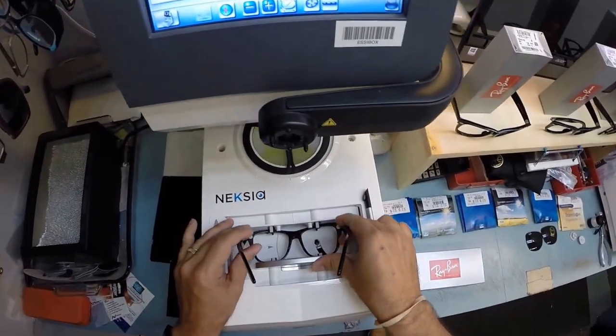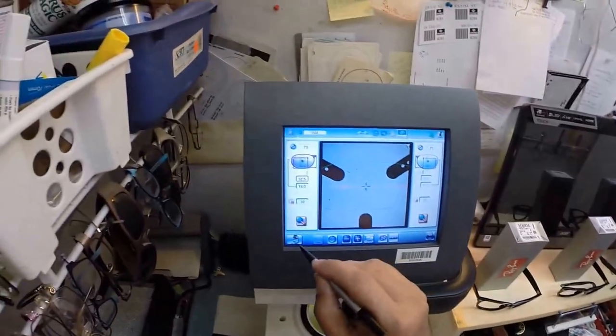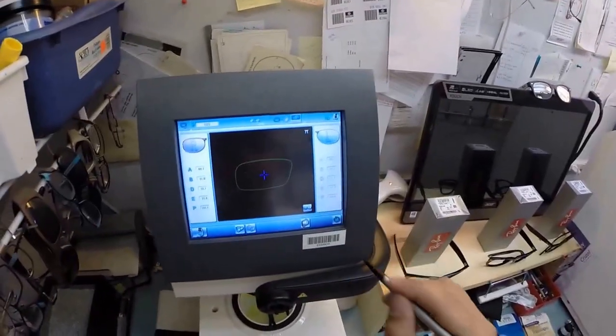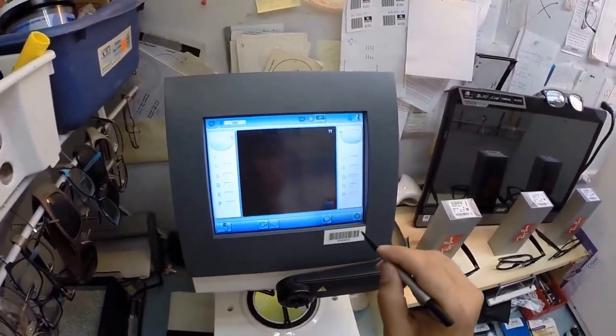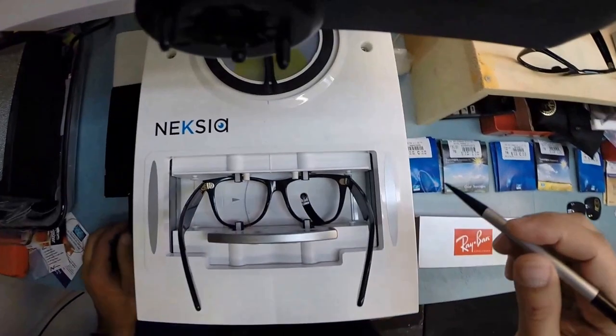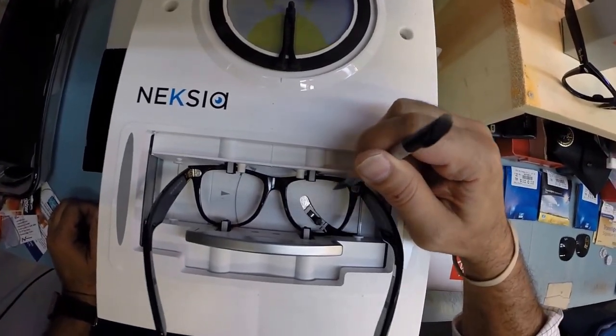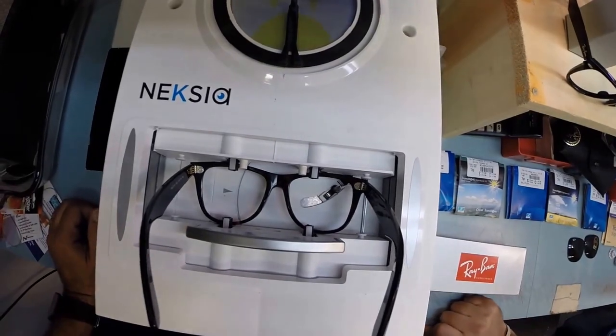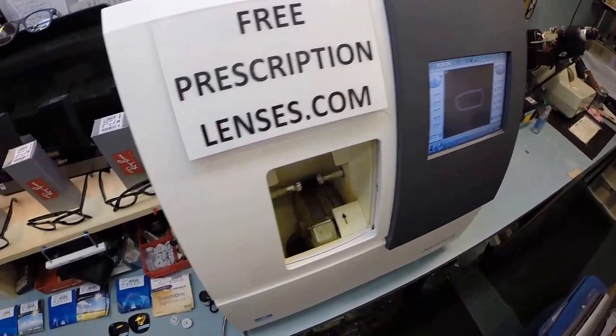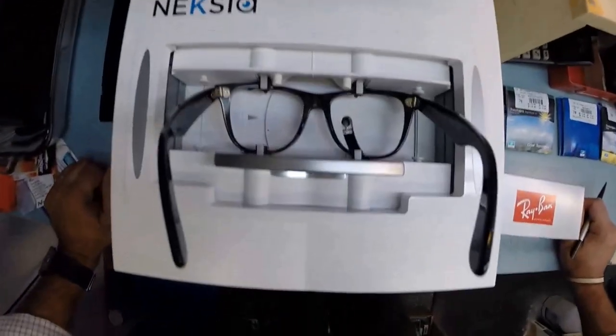Everyone wants to know how does the computer know what shape lens to cut. This is why. This little stylus is going to pop up and trace the shape of the right lens before moving over and tracing the shape of the left.